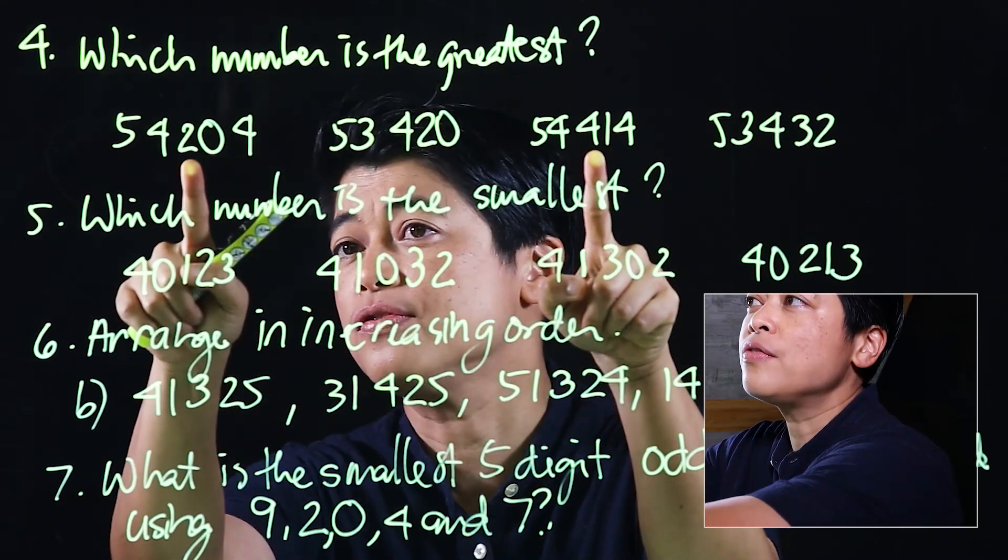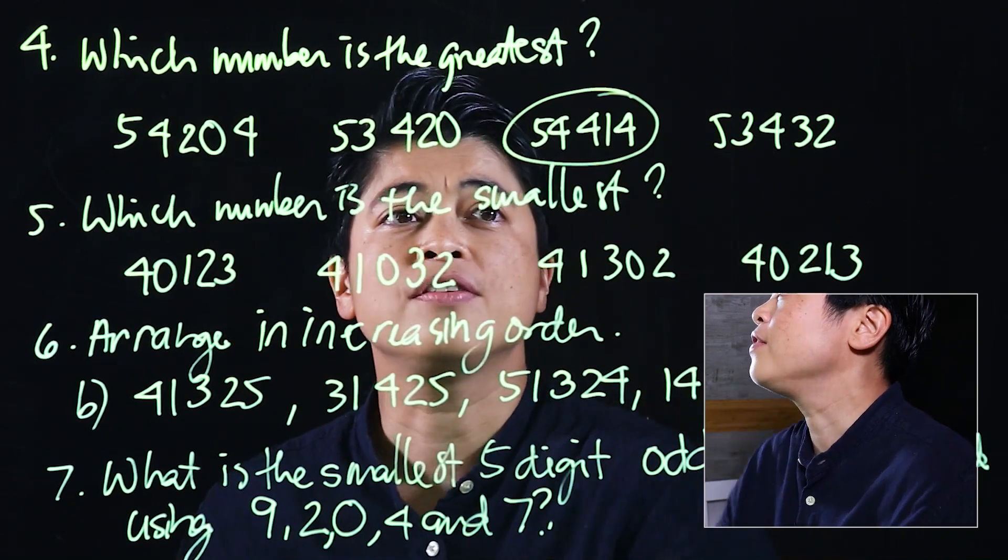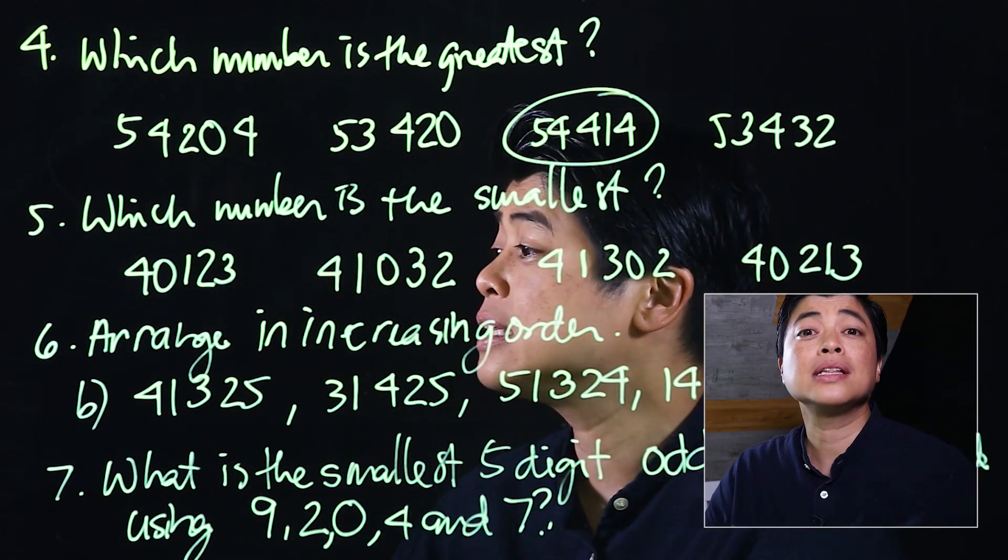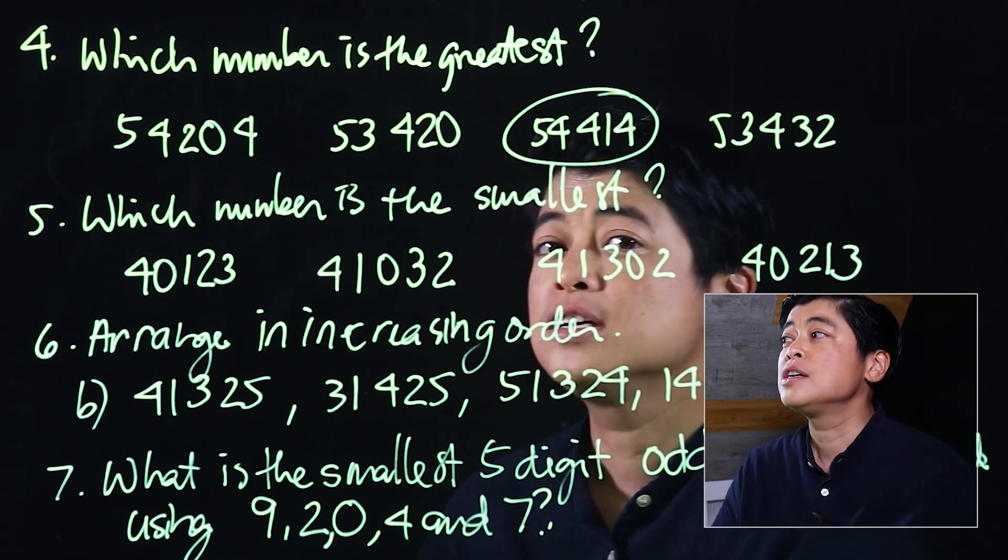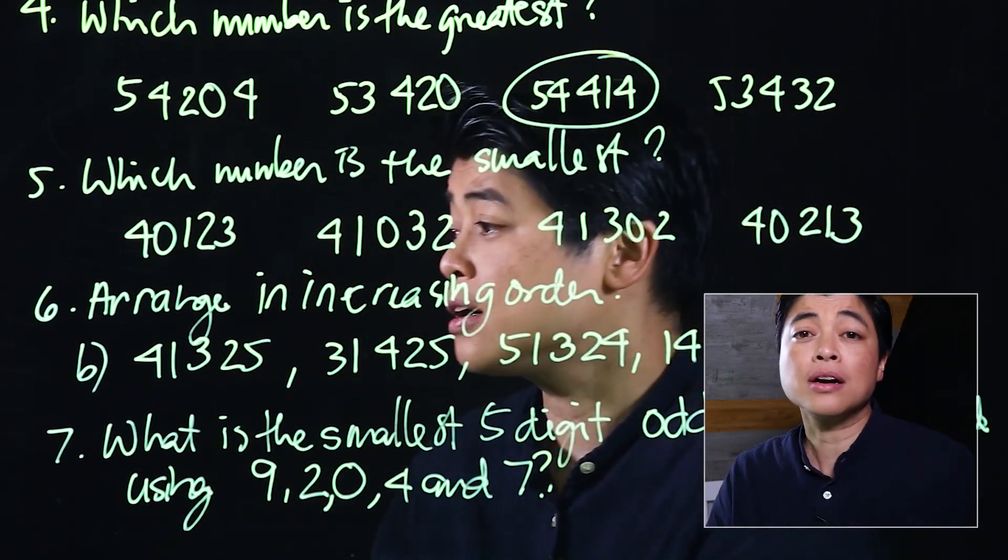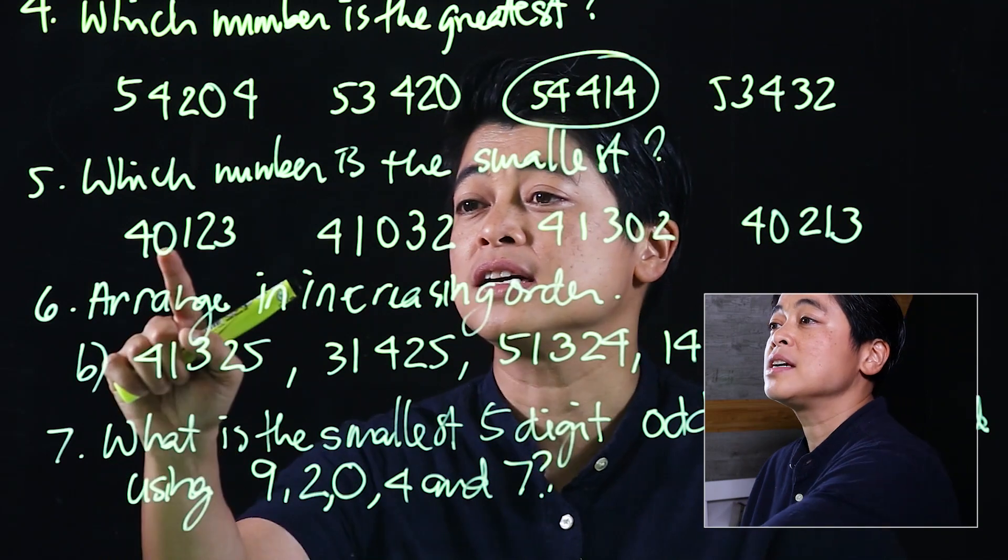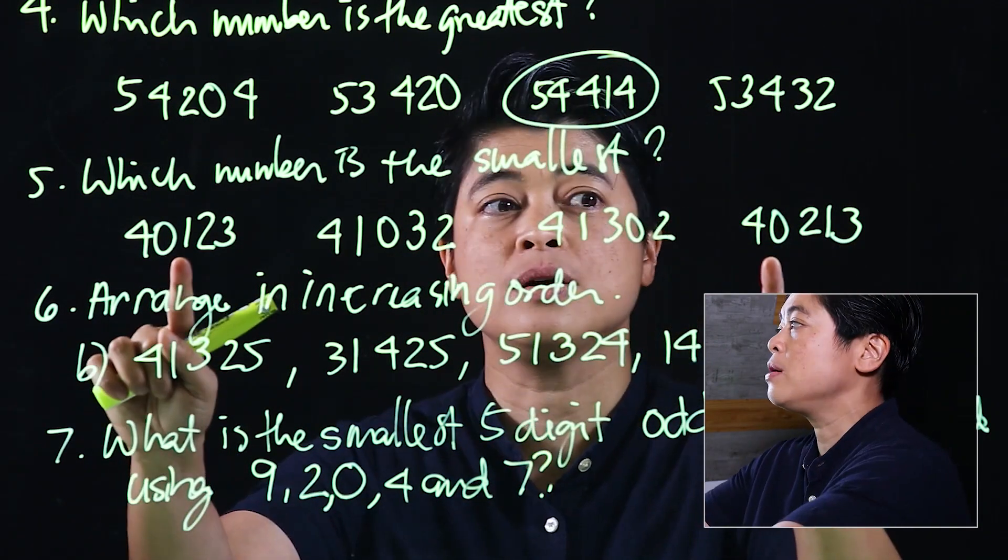The same strategy will be applied with the smallest. We start by looking at the ten thousands place—they're all 4. If we look at the thousands place, there's a 0, a 1, and a 0. Since we want the smallest, it will be the ones with a 0.